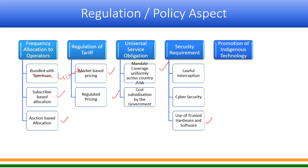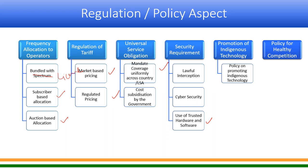There is also tariff regulation — whether to go for market-based pricing or regulated pricing. Universal service — services should be available across the country even in rural areas — requires either a mandate for operators to cover non-commercially-viable areas, or government subsidies. On security: lawful interception provisions must be mandated, cybersecurity must be taken care of, and trusted hardware and software must be used. These are aspects regulators and policymakers must address. Finally, promotion of indigenous technology as India is pursuing, and policies to ensure healthy competition and avoid monopoly markets. With this, our session is complete. Thank you.